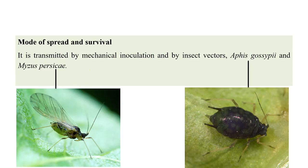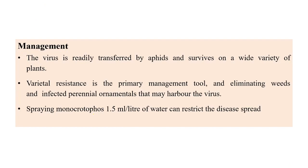The virus is transmitted by mechanical inoculation and insect vectors — Aphis gossypii and Myzus persicae are the two vectors involved in transmission of mosaic disease. For management, controlling vectors helps automatically control the disease. Varietal resistance is the primary management tool; creating resistance is better than relying on insecticides. Insecticides can be recommended for particular conditions, but for long-lasting results, creating resistance is suggested.